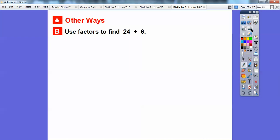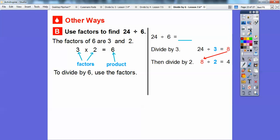Here's another way: use factors to find 24 divided by 6. Since the factors of 6 are 3 and 2 (3 times 2 equals 6), we can use these factors to make it a smaller problem. To divide by 6, we'll divide by 3 first and then by 2 second.